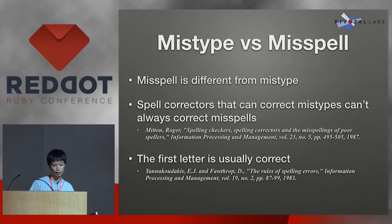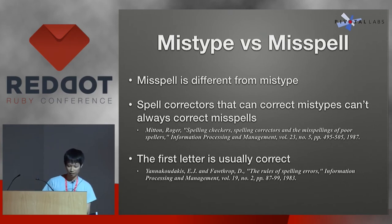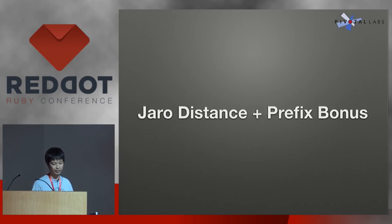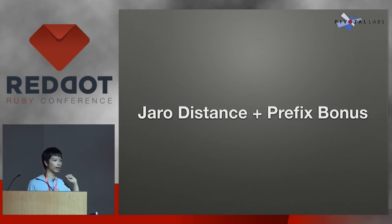Another study said that you always remember the first part of a name, not the last one. Like yesterday, Matt called me Nishida-san — he remembered the first part of my name but didn't remember the last one. So I guess it's a good example. And now it's time to use Jaro-Winkler distance. What is Jaro-Winkler distance? It is basically Jaro distance plus a prefix bonus. The prefix bonus has been added because you always remember the first part of the name.